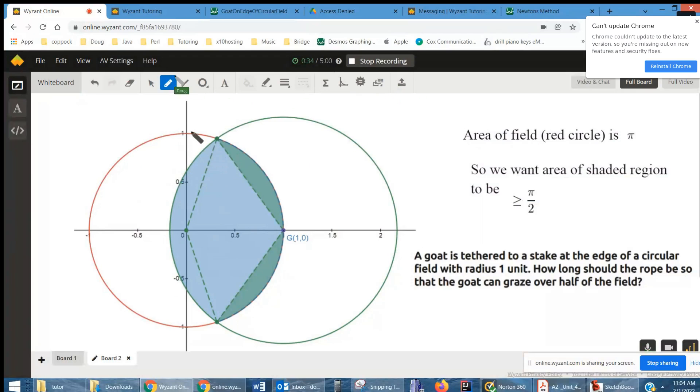Note that the area of the field, the red circle, is π r squared, so it's just π. So we want the area of the shaded region to be greater than or equal to π over 2.